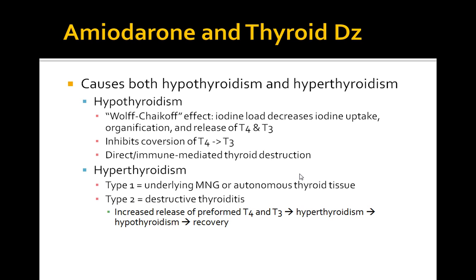In Type 2, there's destructive thyroiditis, with an increased release of preformed T4 and T3 leading to hyperthyroidism, then hypothyroidism, and finally recovery. For Type 1, there's increased thyroid blood flow on Doppler ultrasound and the treatment is methimazole. For Type 2, there's an increased ESR, decreased flow on Doppler, and the treatment is steroids.